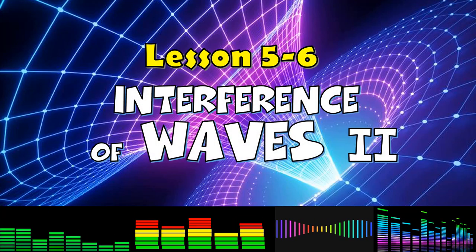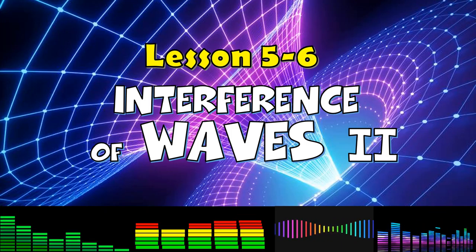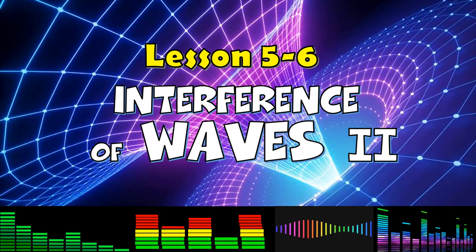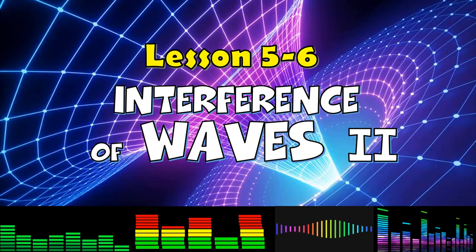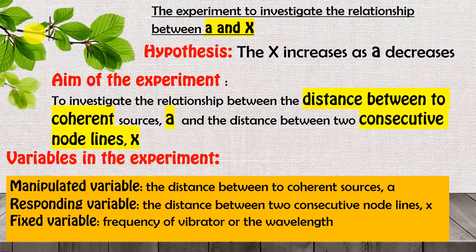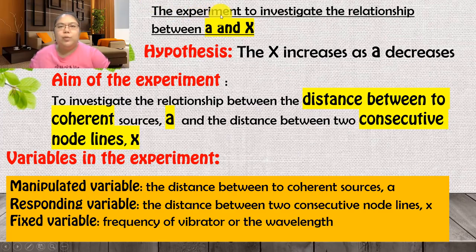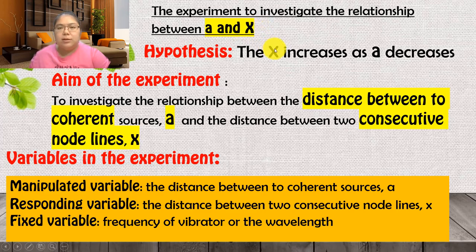Hi everyone, BC again. Today I will continue the video clip on 5.6 interference of waves. The first experiment investigates the relationship between 'a' and 'X', where 'a' is the distance between two slits or two sources, and 'X' stands for the distance between node lines.